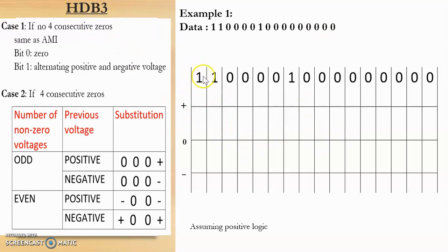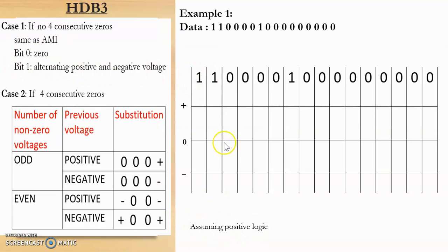The first bit is 1. At this point there are no 4 consecutive zeros, so we will use case 1: no 4 consecutive zeros means encoding is the same as AMI. For bit 1, it will be alternating positive and negative voltages. Since this is the first bit, we assume positive logic and consider it to be positive. So this 1 will be encoded as positive.